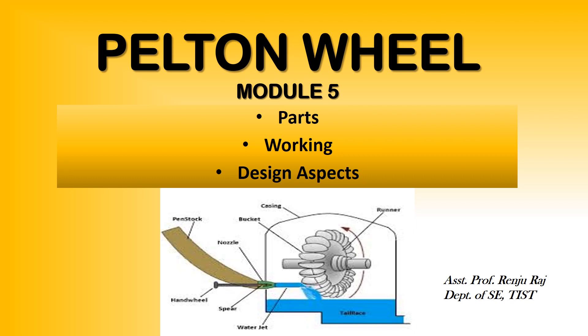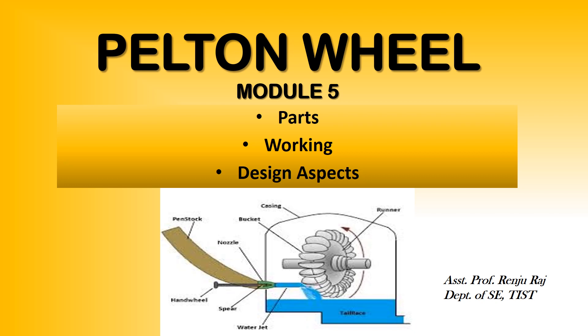The first kind of turbine we study is the Pelton wheel or Pelton turbine. It is basically a tangential flow impulse turbine. As it is an impulse turbine, pressure energy of water is converted into kinetic energy in the form of a high-speed water jet, and this jet strikes the wheel tangentially — hence it is called a tangential flow impulse turbine. It is named after Lester Pelton, an American engineer.